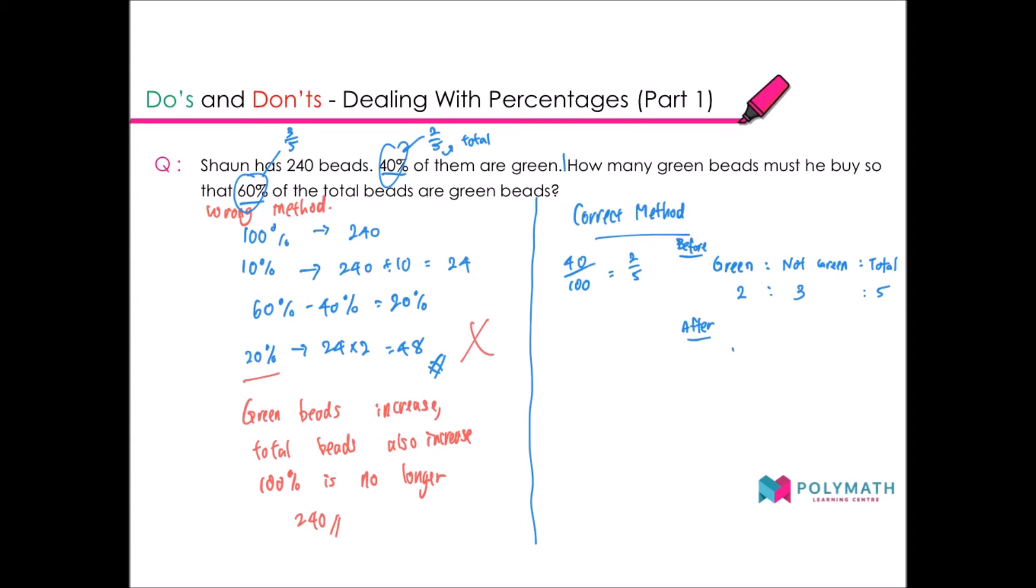The after ratio: green, not green, and then again total. How many green beads must he buy so that 60% of the total beads are green beads? So 60% is 3 over 5. Now the total will be 5 units, the denominator; the green beads will be the numerator, 3 units; and then the not green one will be 5 minus 3, 2 units.